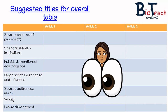The first thing I want to suggest is putting together a table for your plan. In this table I've got some headings in the left-hand column and across the top I've got articles one, two, and three. The headings are designed to help you plan for each of the questions. For example, the source of information will contribute towards questions one and three. The individuals and organisations mentioned are for question two, the references used are relevant for question three, and the future development part is more useful for question four.